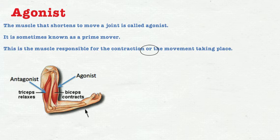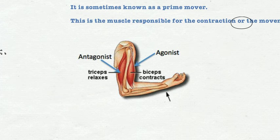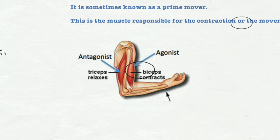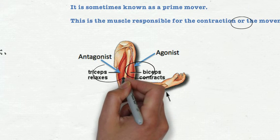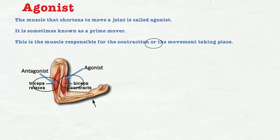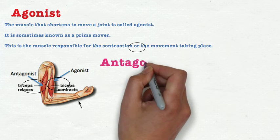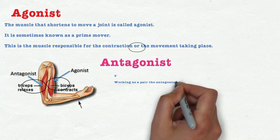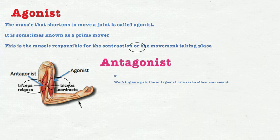Within this picture here you can see that the agonist will be the one that's contracting and that will draw the arm upwards. And also identify here that we have the tricep working as its pair. So it's agonistic pair and the one that's relaxing is known as the antagonist. So the agonist is the contracting one, the antagonist is relaxing.